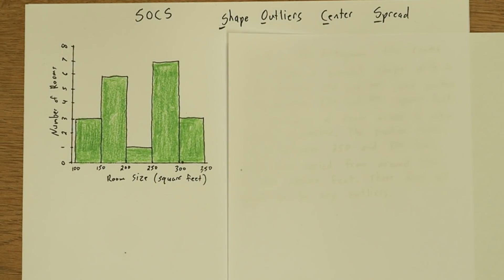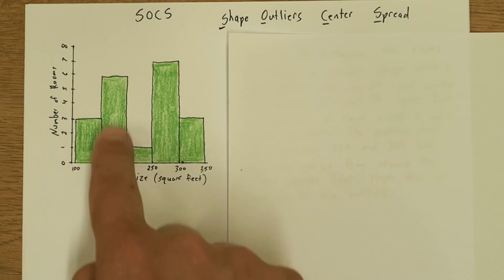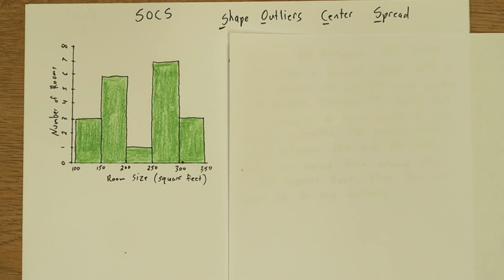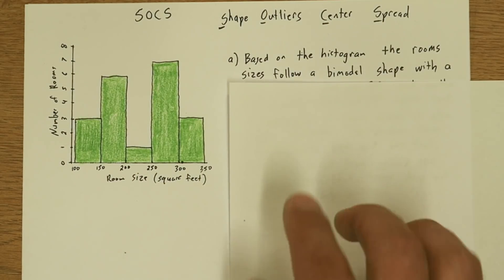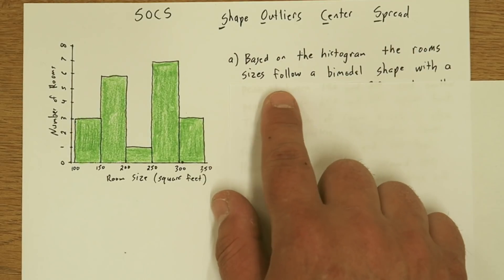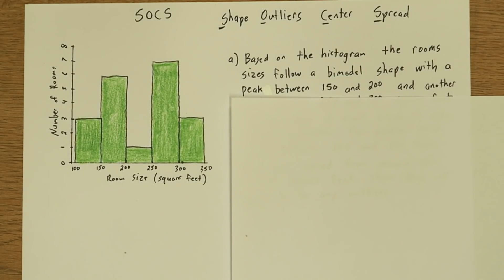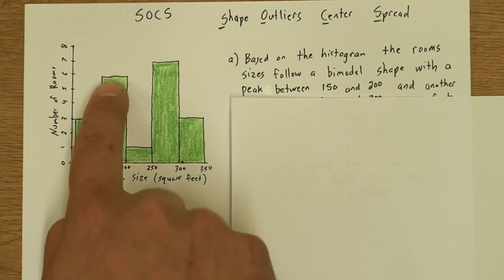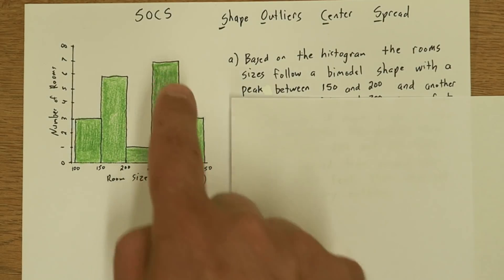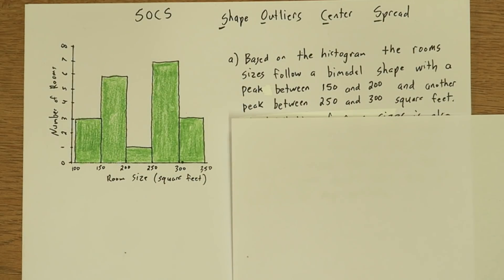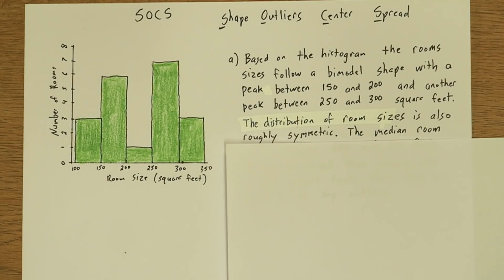So the first thing we're going to talk about is shape. Now we see a clear bimodal distribution here. Based on the histogram, the rooms follow a bimodal distribution with a peak between 150 and 200, and the other peak right here between 250 and 300 square feet. Next thing we're going to talk about is that the distribution is roughly symmetric.